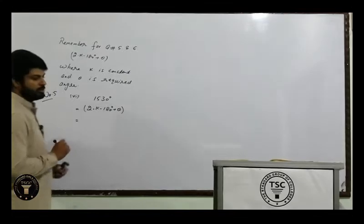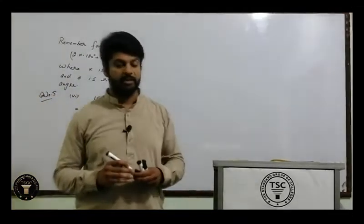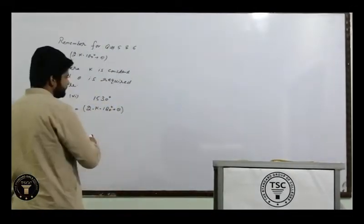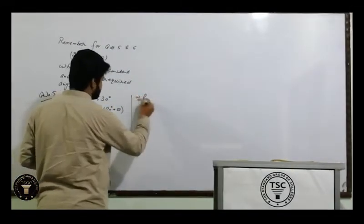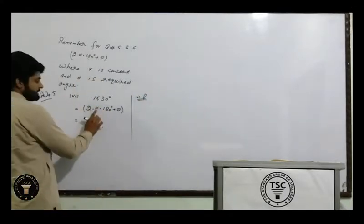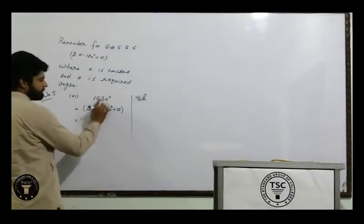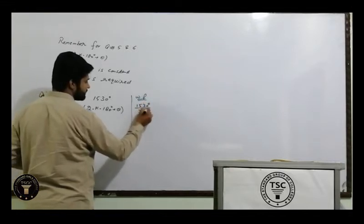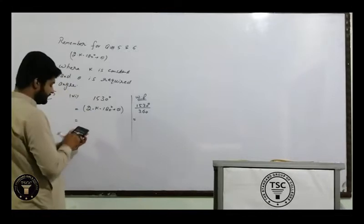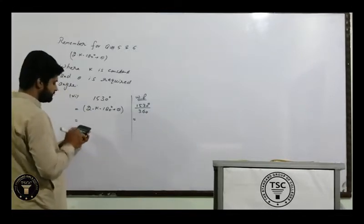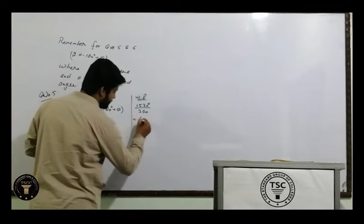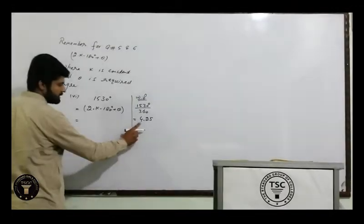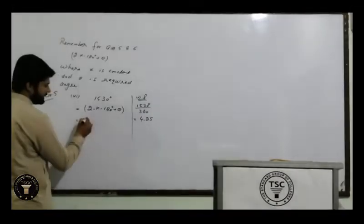Ab k ki value find karne ke liye, hamesha working portion mein aana hai. Kaisi find karenge k ki value? Jo bhi angle aapke paas hai, usse aapne divide karna hai 360 par. 1530 divided by 360 = 4.25, so k value is 4.